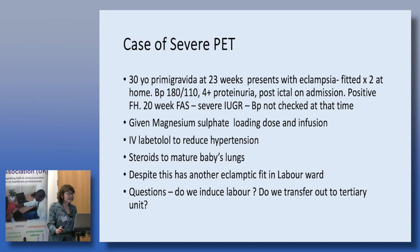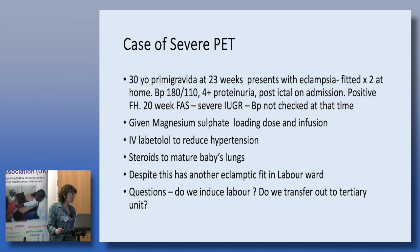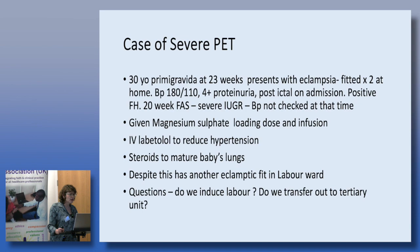Consider this case: a 30-year-old primigravida presenting at 23 weeks, having fitted at home twice. On arrival her blood pressure was 108 over 110, she had 4+ proteinuria — the diagnosis of eclampsia was obvious. The fetal heart was positive. Three weeks earlier her fetal anomaly scan showed severe IUGR. We gave her magnesium sulphate loading dose and infusion to reduce the risk of further fits, intravenous labetalol to bring her blood pressure down, and steroids to mature the baby's lungs. It was difficult to control her blood pressure and she had another fit. This baby is 23 weeks and tiny. Transferring the mother out would not be safe with someone who had had three fits, so the decision was taken to induce labour.